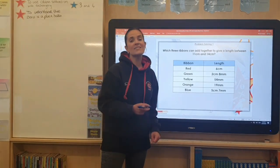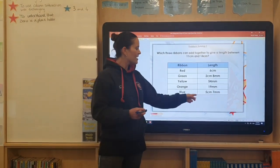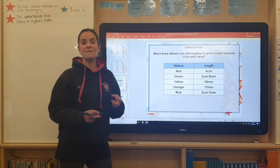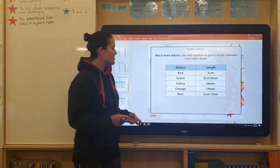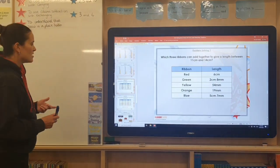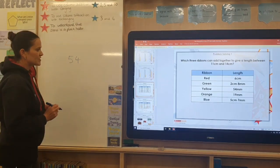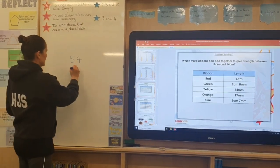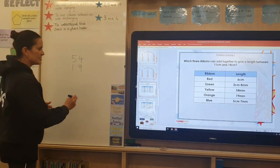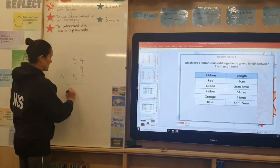So I know that in one centimetre there are 10 millimetres. So in five centimetres there are going to be 50 millimetres. And then that extra seven there would make 57. So if I add together the yellow, which is 54 millimetres, the orange, which is 19 millimetres, and the blue, which is 57 millimetres.